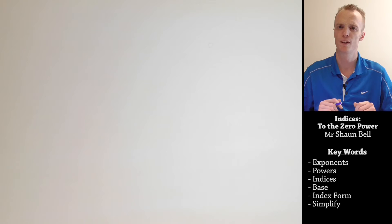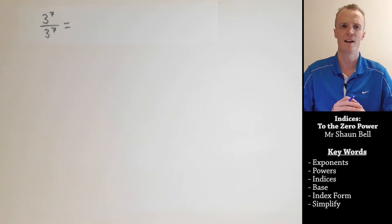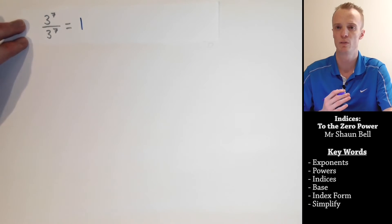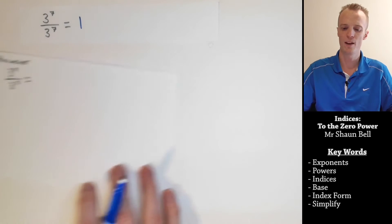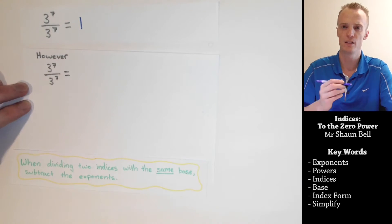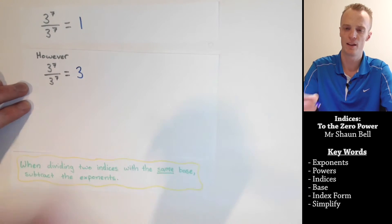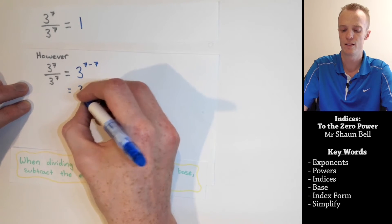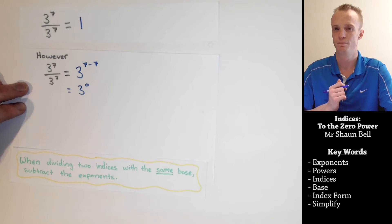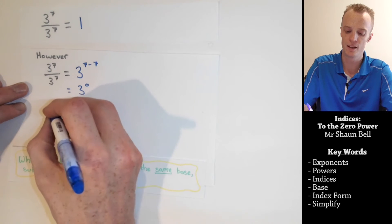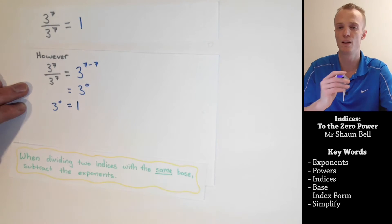Let's consider another example. What if we have three to the seventh power divided by three to the seventh power? We're dividing the top number by itself, so it must equal one. However, if we apply that same rule — same base, subtract the exponents — seven subtract seven is zero, giving us three to the zeroth power. But we already know this problem equals one, so three to the zeroth power must also be equal to one.